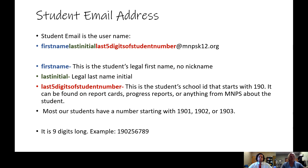There's a formula to figure out your student's username and email. It is found by combining the student's first name, last initial, and the last five digits of the student ID number. In the email, you add @mnpsk12.org. The first name is the student's first legal name with no nickname. The last initial is the first letter of the legal last name. The last five digits come from the student's ID number that starts with 190 and can be found on report cards, progress reports, or anything from MNPS about the student.